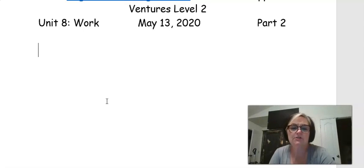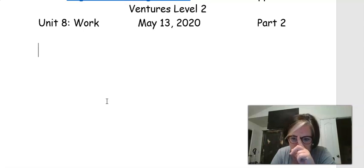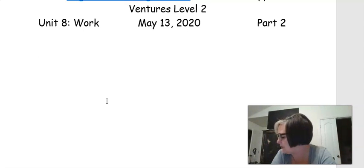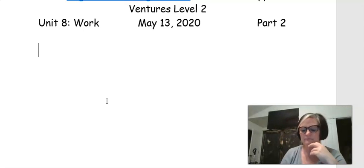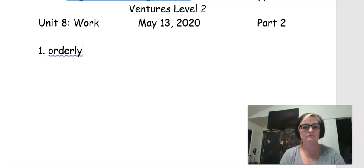You should have completed part two. And these are just sentences that help describe the workers. And we're going to use the job titles that we just used in part one for these. So number one says, I am friendly and I like to help people. So that would be an orderly. I think that could be a cashier too, but they said orderly.